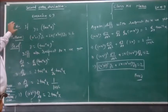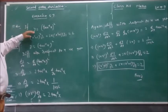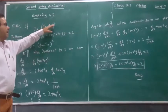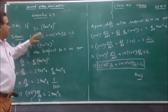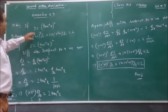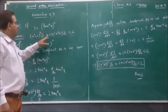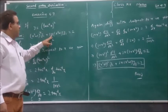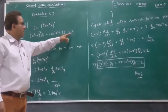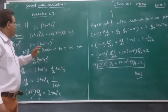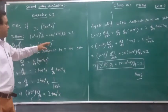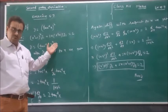Next question, question number 17. Here y is equal to tan inverse x whole squared. We need to prove here x squared plus 1 whole squared times y2 plus 2x times x squared plus 1 times y1 is equal to 2.